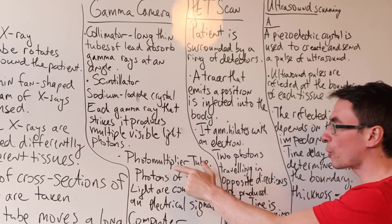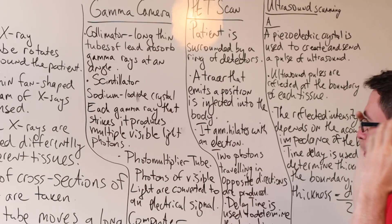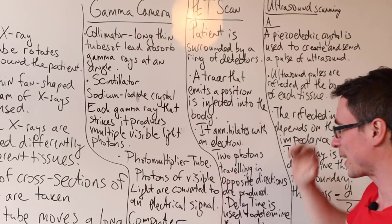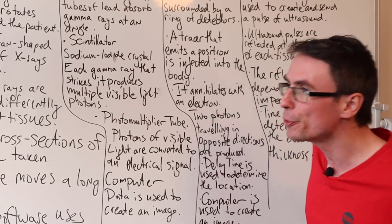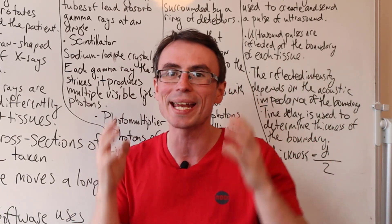After that, the visible light photons go into the photomultiplier tube, where the photons are converted into an electrical signal. And finally, all this data is used by a computer to create an image.